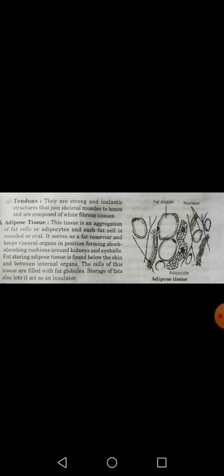The second type of dense regular connective tissue is tendons. Tendons are strong and inelastic structures — they have no elasticity. They join skeletal muscles to bones. Tendons are composed of white fibrous tissue, whereas ligaments were made of yellow elastic fibers.